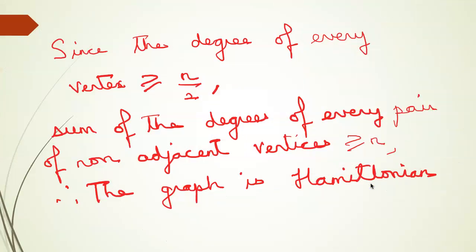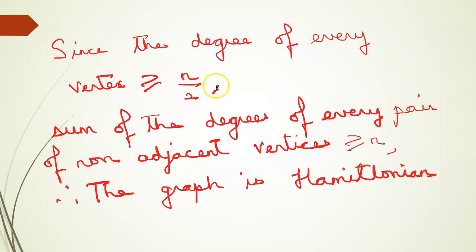How do we prove this? Since the degree of every vertex is greater than or equal to n/2, the sum of the degrees of every pair of non-adjacent vertices is greater than or equal to n. So by our earlier property, because the sum of the degrees of every pair of non-adjacent vertices is greater than or equal to n, the graph is Hamiltonian.